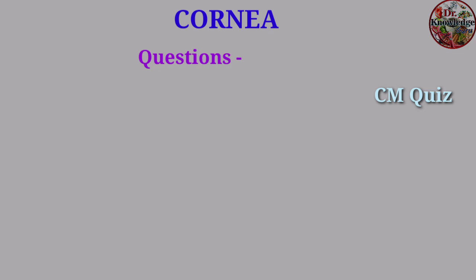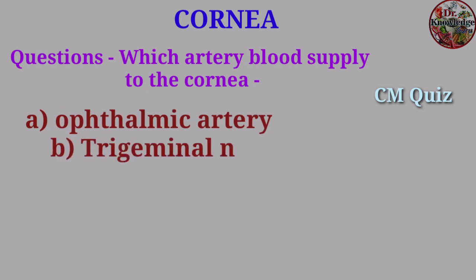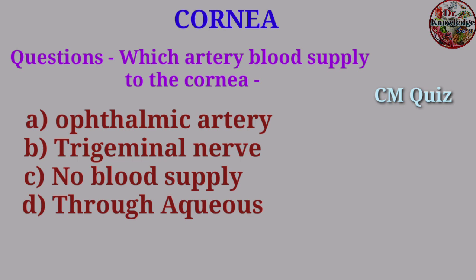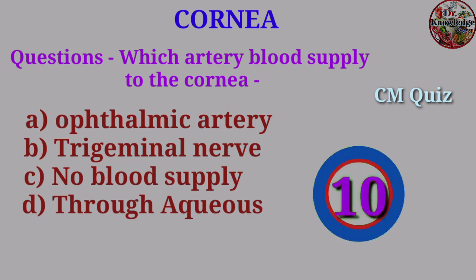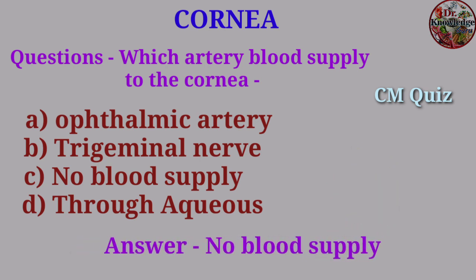Question: Which artery supplies blood to the cornea? A. Ophthalmic artery, B. Trigeminal nerve, C. No blood supply, D. Through aqueous. Answer: No blood supply, because the cornea is transparent (avascular).